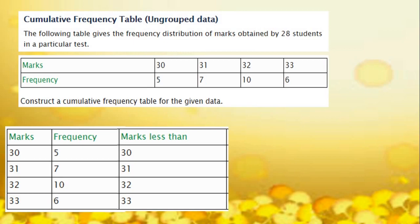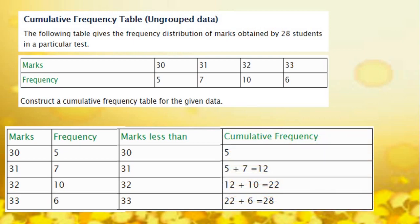Now we have to find the cumulative frequency. For mark 30, the frequency corresponding to mark 30 is 5. Then, marks less than or equal to 30 is also 5.